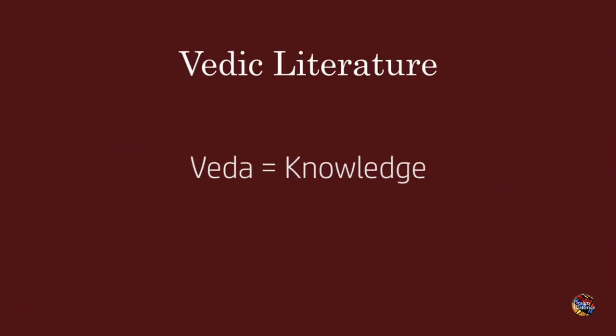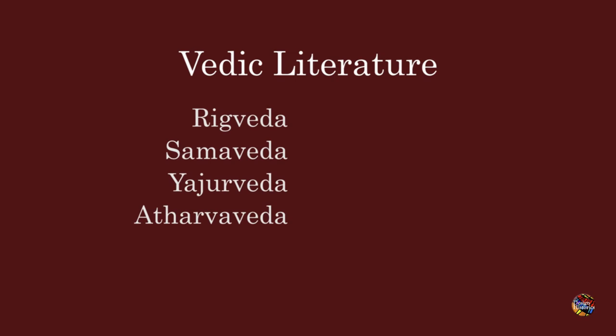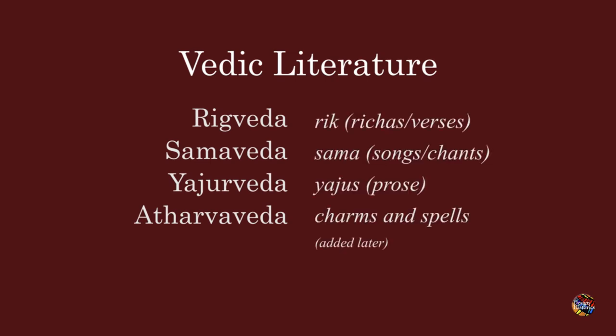Now let's talk about the Vedic literature. The meaning of the word Veda is 'to know' or knowledge. There are a total of four Vedas. The oldest is the Rig Veda, which means knowledge in the form of Rick or verses. Sama Veda means knowledge in the form of Sama. Yajur Veda means knowledge in the form of Yajus. And the Atharva Veda is basically a collection of charms and spells.